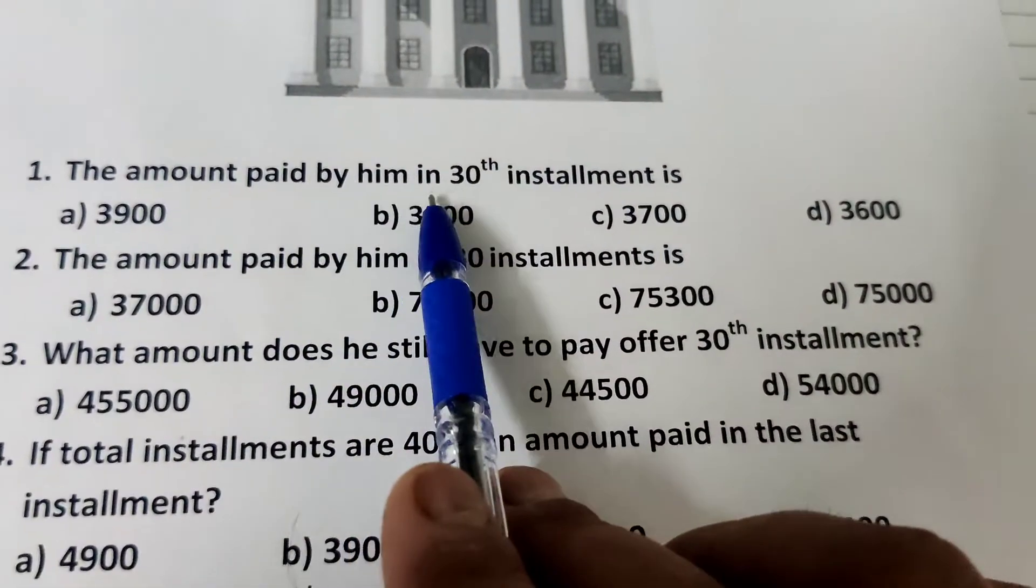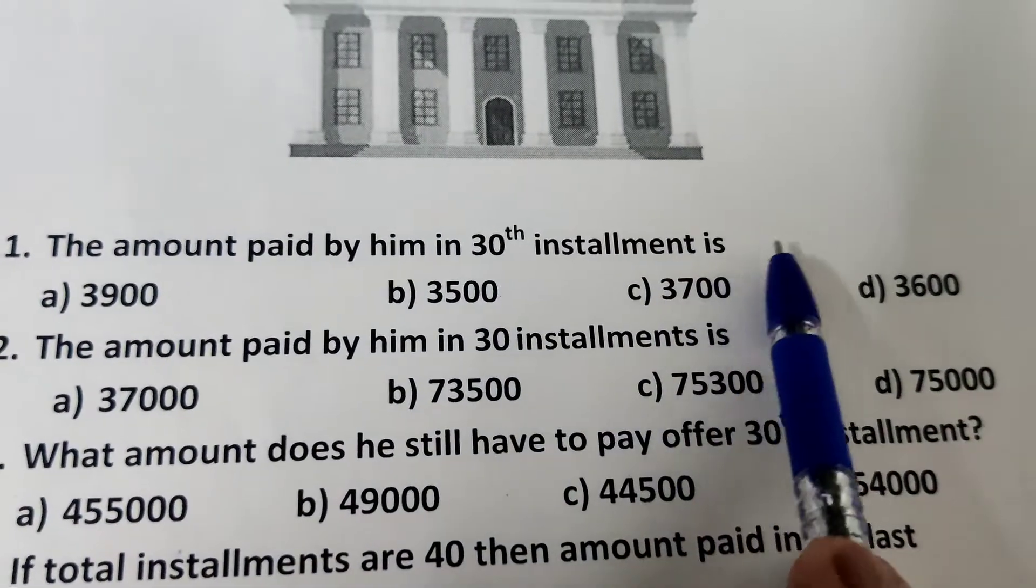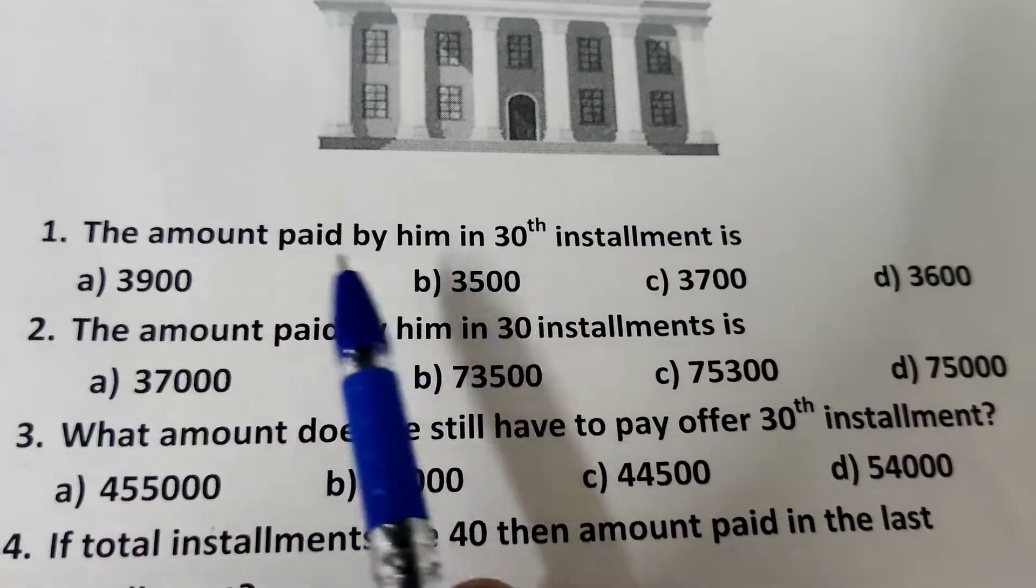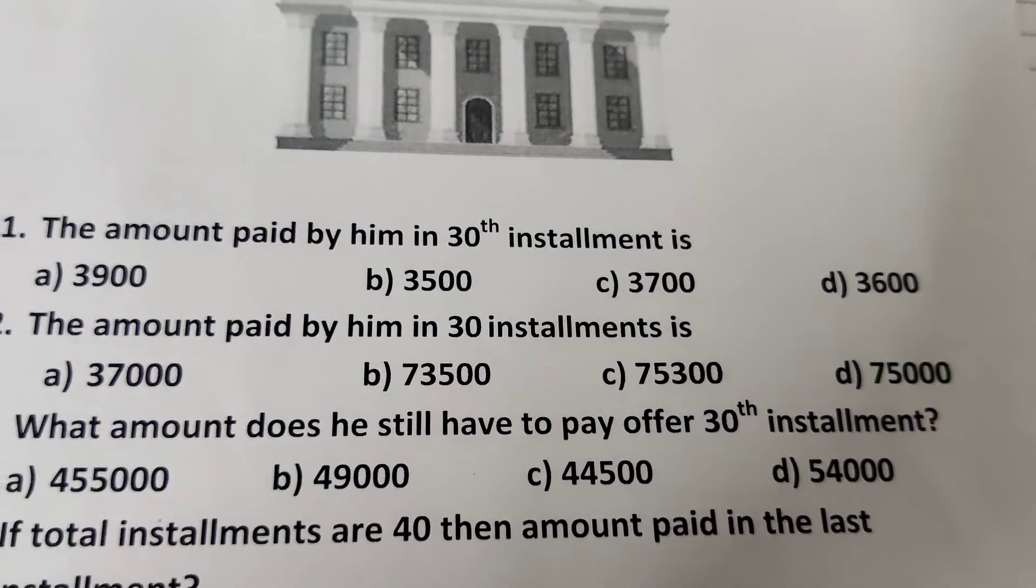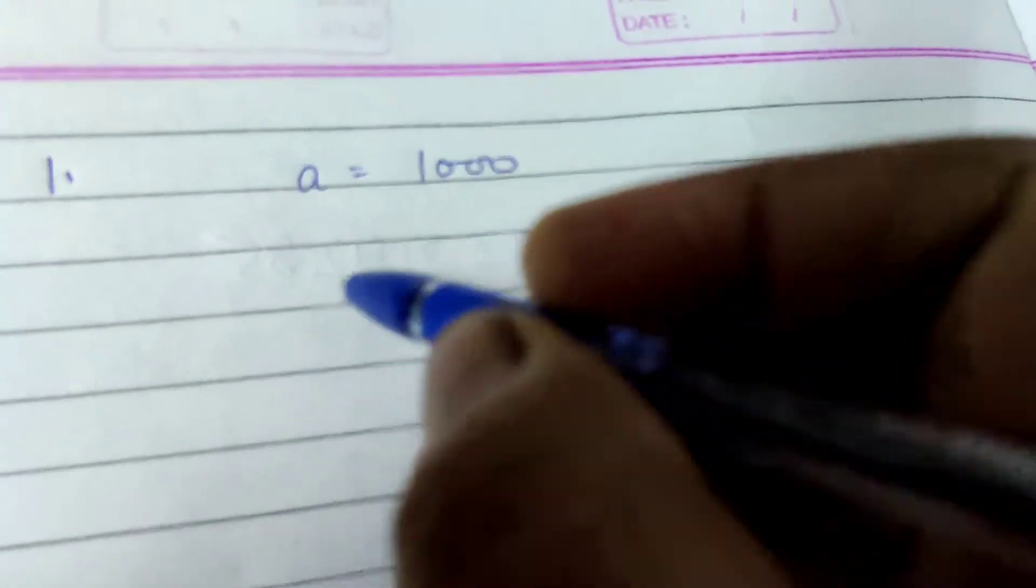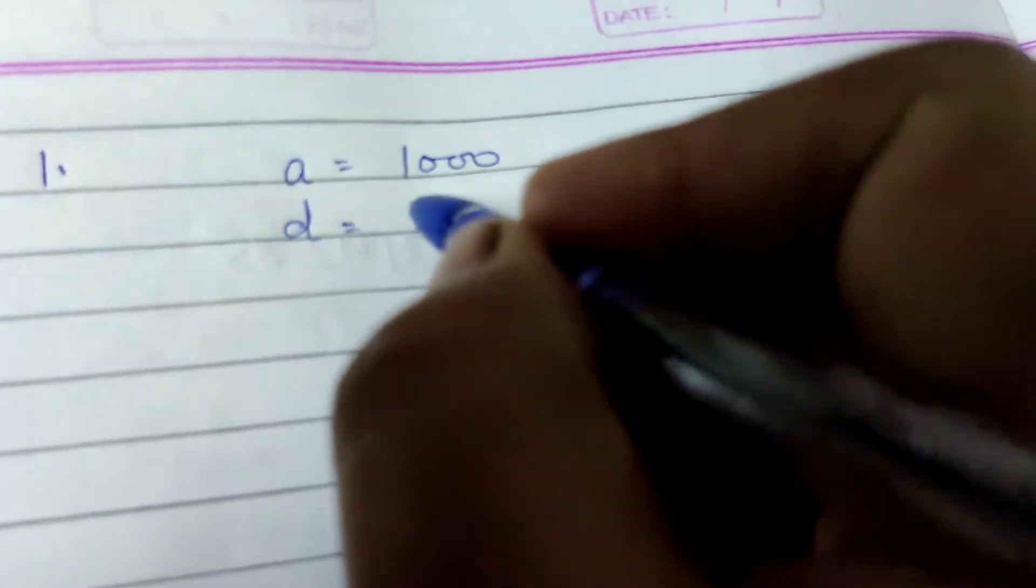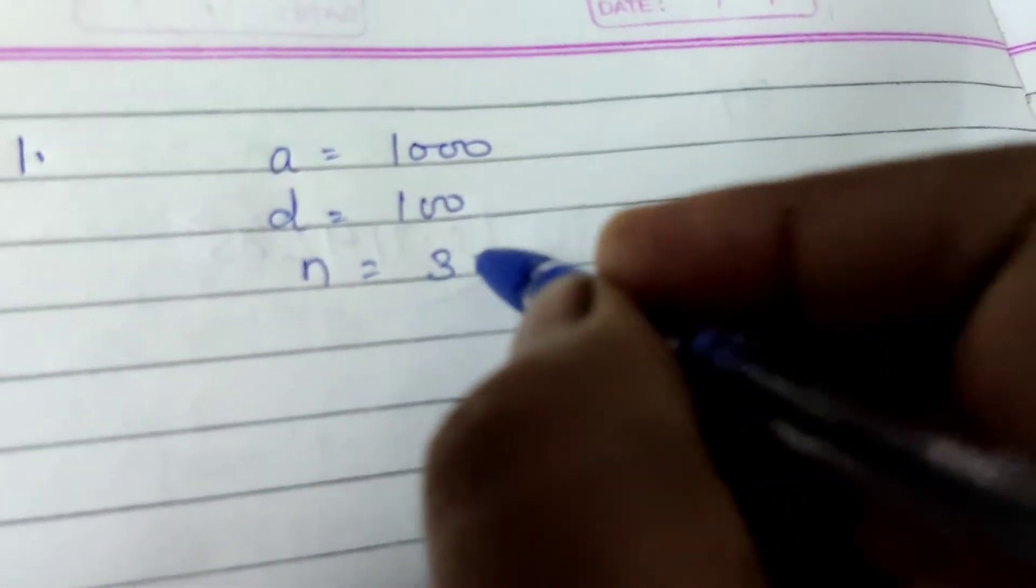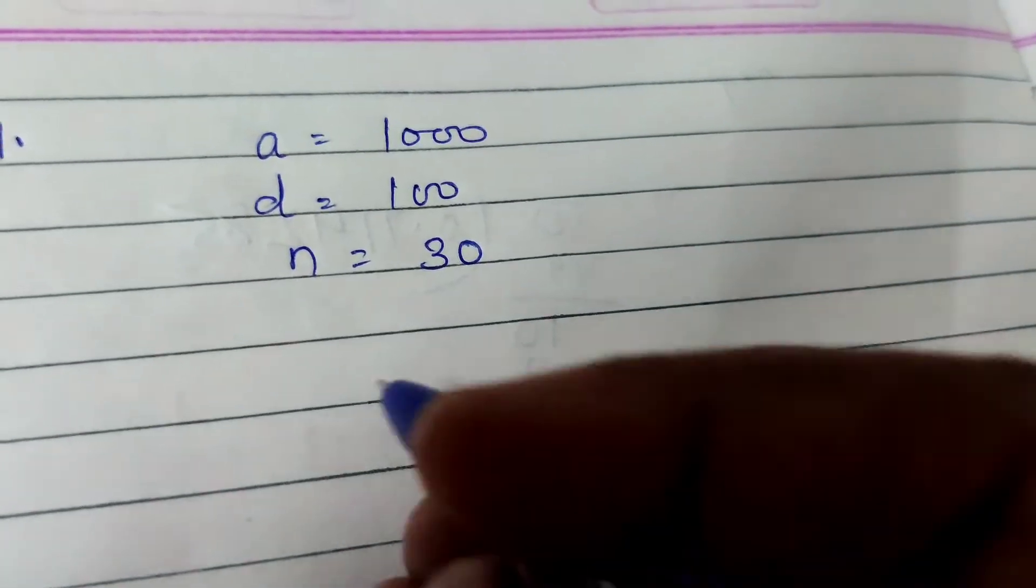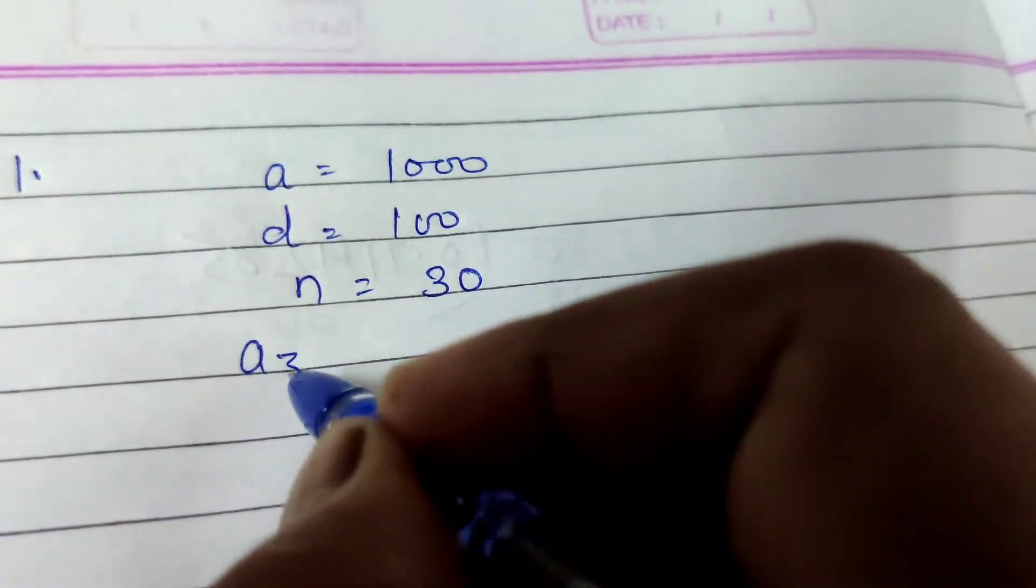The amount paid by him in 30th installment is 3900, 3500, 3700 and 3600. A is first installment is Rs.1000. Increment increase 100. Find 30th installment means n equal to 30. We have to find the A30, the 30th term.